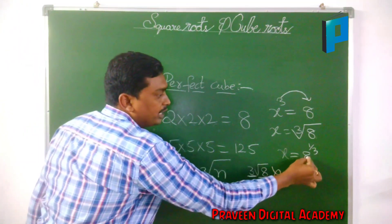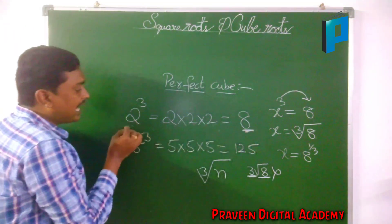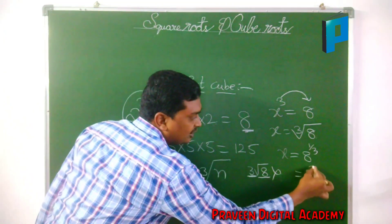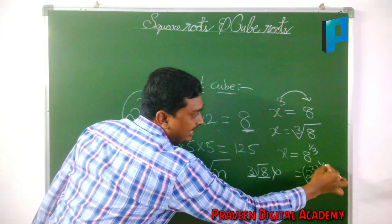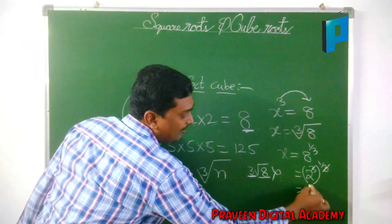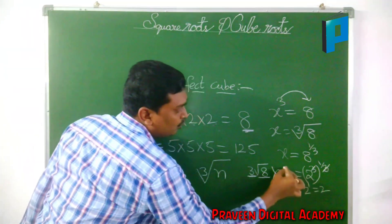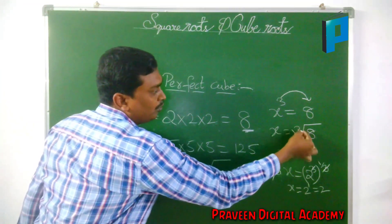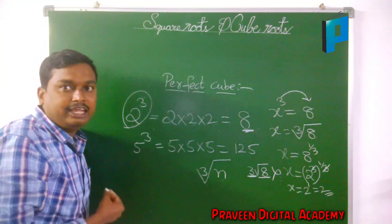So x equals y to the power 1 by 3. Since y can be written as 2 cubed, we write it as 2 cube whole to the power of 1 by 3. Here the 3s cancel, so we are left with 2 to the power 1, which is simply 2. So the value of x is 2 — the cube root of 8 is 2.